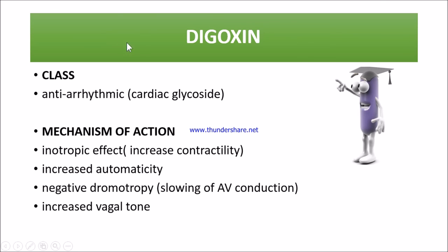Let's see ECG changes with the drug digoxin. Digoxin is a cardiac glycoside and antiarrhythmic drug. Its main mechanism of action is positive inotropy — it increases contractility — and it increases automaticity of the heart, has negative dromotropy (slowing AV node conduction), and increases vasovagal tone. Digoxin gives fewer but better contractions.